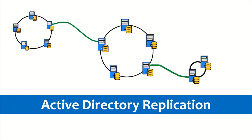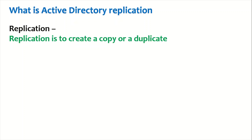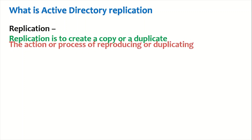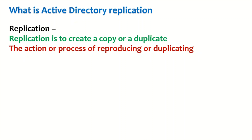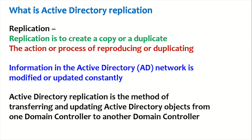Now let us dive into active directory replication. Replication means to create a copy or duplicate something — the action or process of reproducing or duplicating. The information in an active directory network is modified and updated on a constant basis, and active directory replication is the method of transferring and updating active directory objects from one domain controller to another.